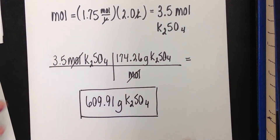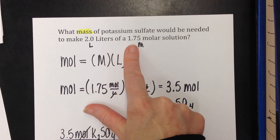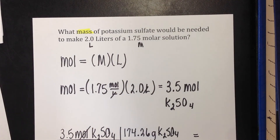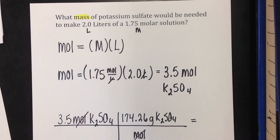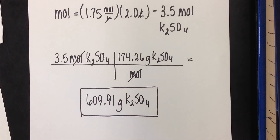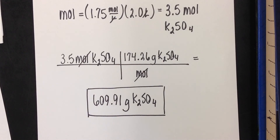So if an experiment required two liters of a 1.75 molar solution of potassium sulfate, you would weigh out 609.91 grams of potassium sulfate, dissolve it in enough water to bring the final volume up to two liters, and you would have a perfect 1.75 molar solution. Molarity is not hard — just think of it as how much solute is dissolved per liter of solution. I hope this lesson on molarity has helped clarify things for you.